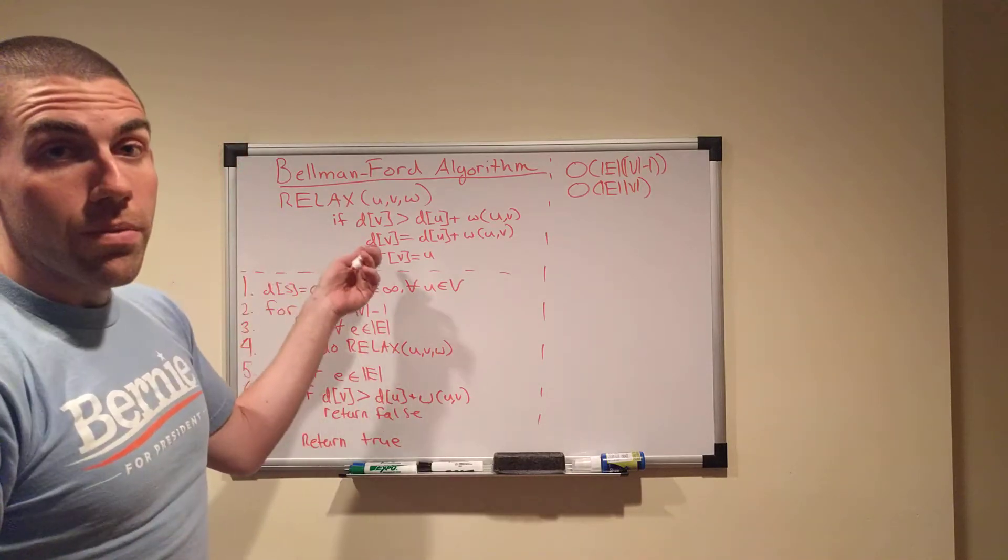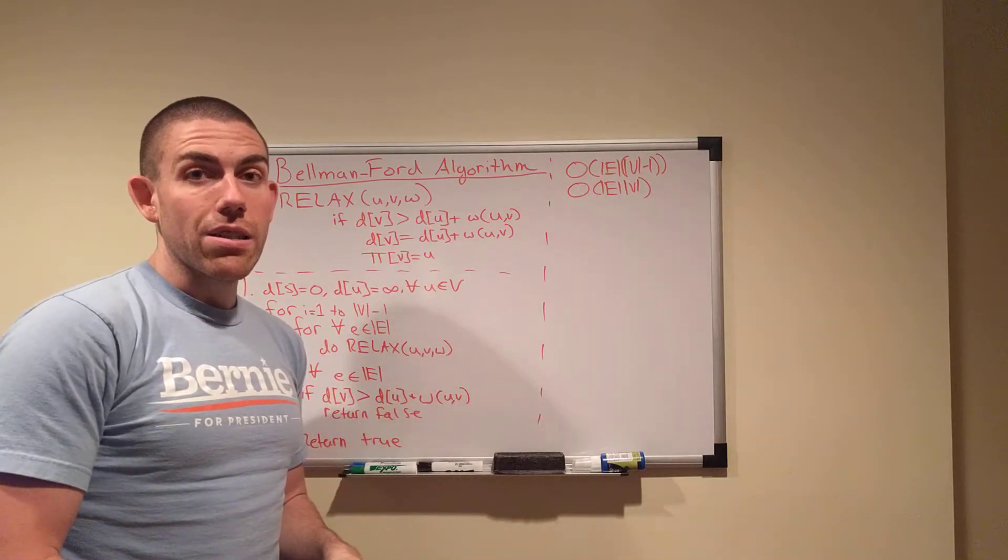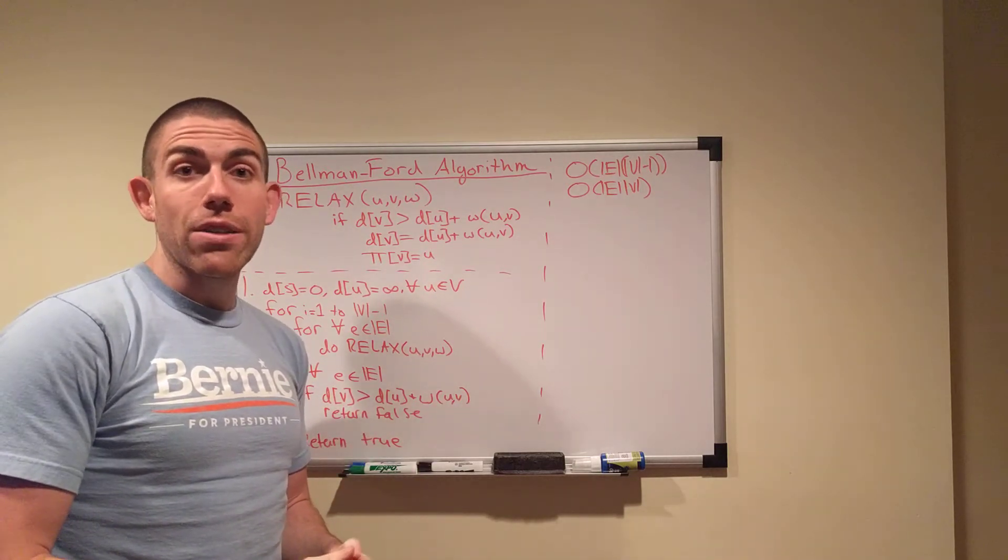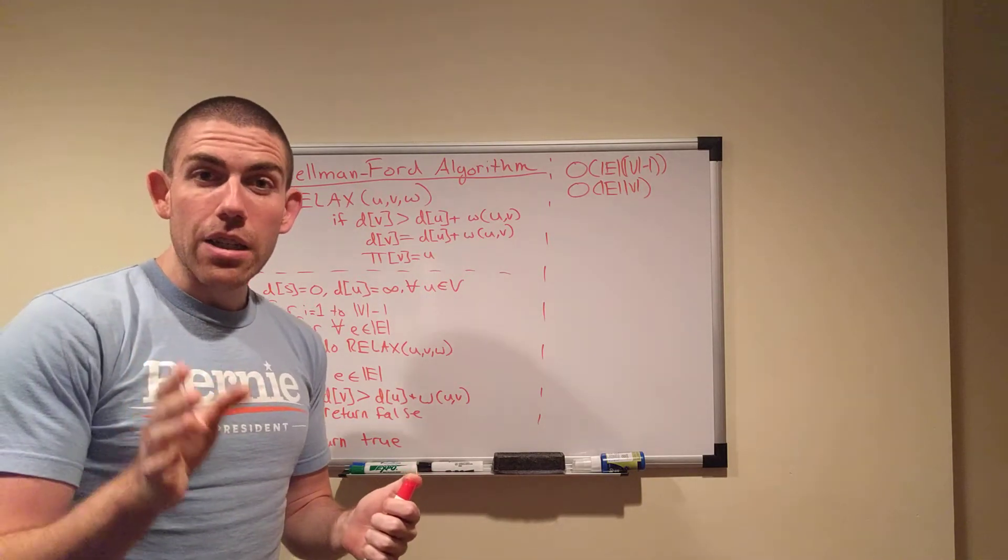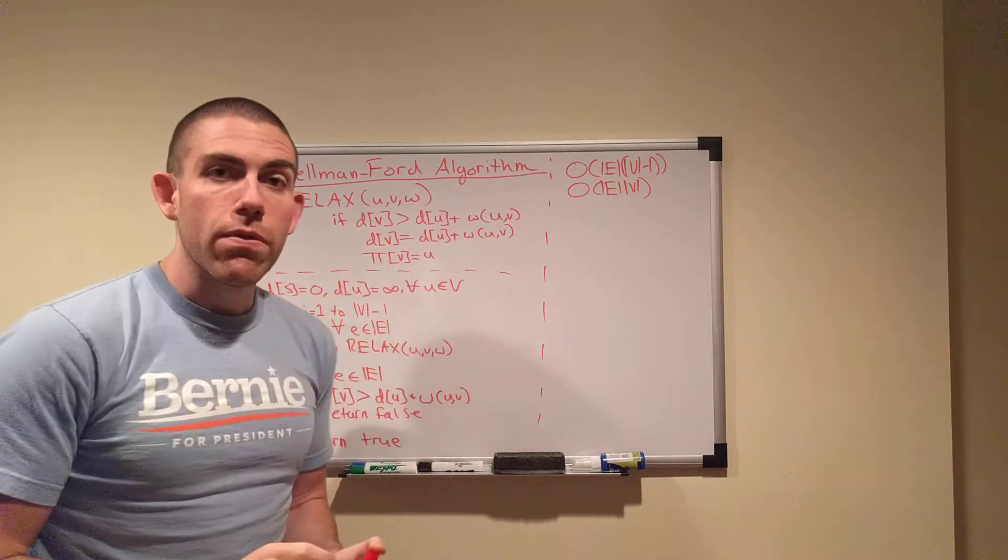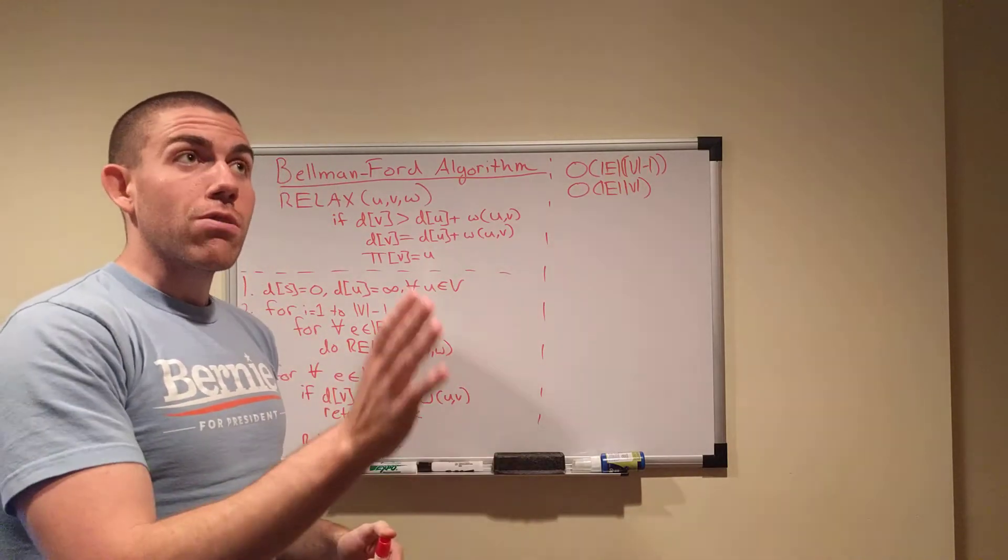The difference between this algorithm and Dijkstra's is that Bellman-Ford can handle negative weight cycles. So, if you have a graph that you know has negative edge weights, and you're not sure if there's a negative weight cycle, you use Bellman-Ford.